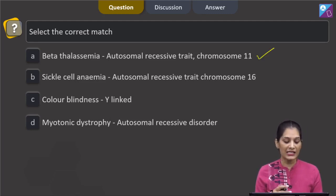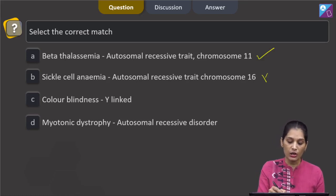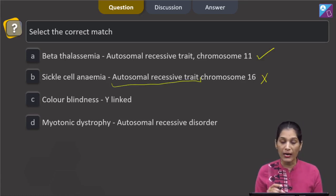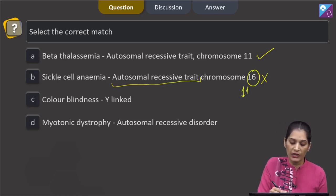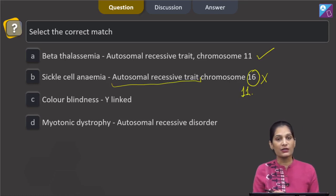Now, B: sickle cell anemia, autosomal recessive trait, chromosome number 16. No. Sickle cell anemia undoubtedly is an autosomal recessive trait but the gene for it is also located in chromosome number 11 which makes it false.